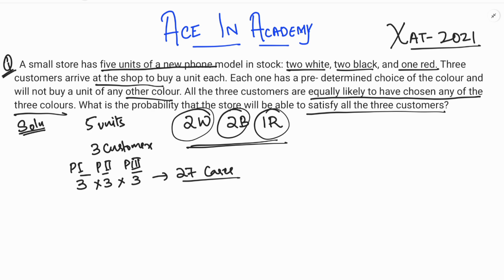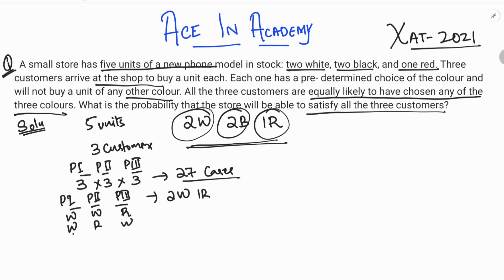We need to find how many of these 27 cases have the customers' needs satisfied. For example, if the total choice is two white and one red, the store can satisfy this since it has two whites and one red in stock. The different arrangements are: white-white-red, white-red-white, or red-white-white — giving three different cases.